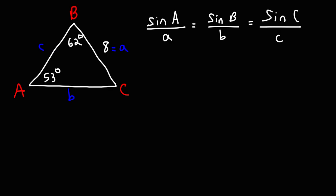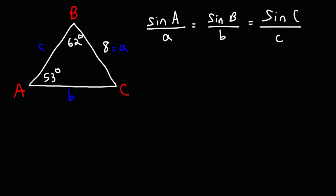Now one of the first things we need to do is calculate angle C, because the three angles of a triangle must add up to 180. So angle C is going to be 180 minus 53 minus 62, and so this is going to be 65 degrees.